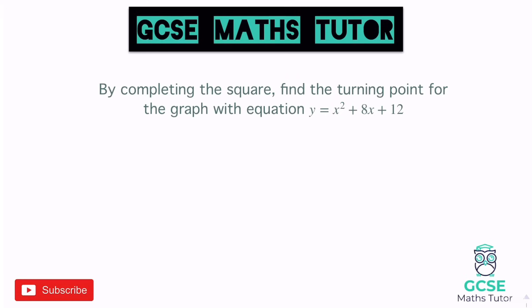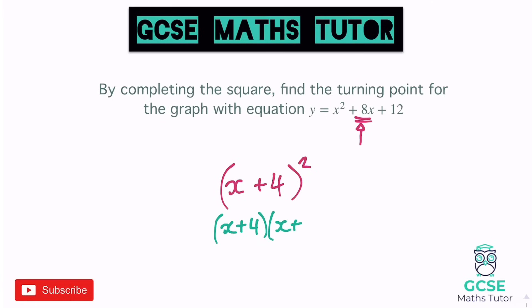Completing the square — we look at the coefficient of x and put it in a completed square format, which looks like this: x plus or minus a number, squared, and then something else after it. The number that goes in the bracket is just half of the coefficient of x. So half of eight is four, it's positive, so we keep it as plus four. Now if we were to expand this bracket — x plus four, squared — we can write it out as a double bracket.